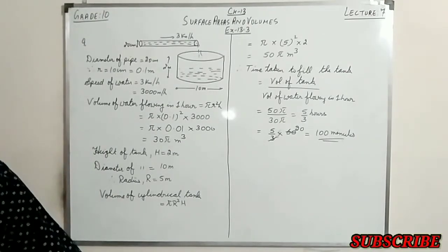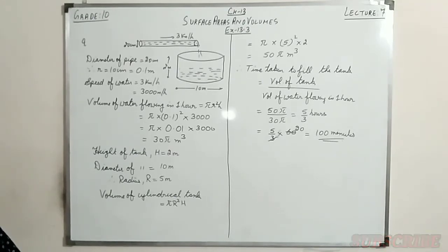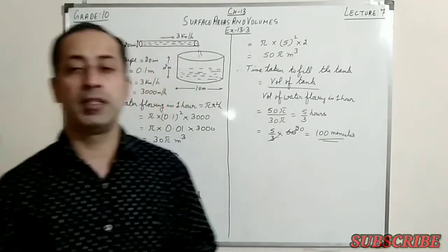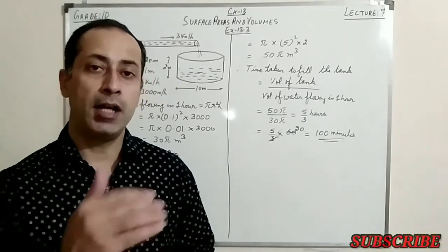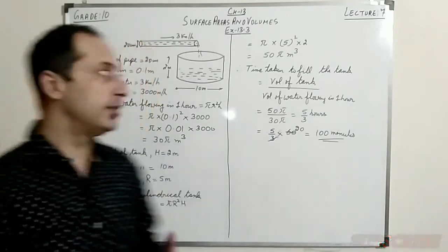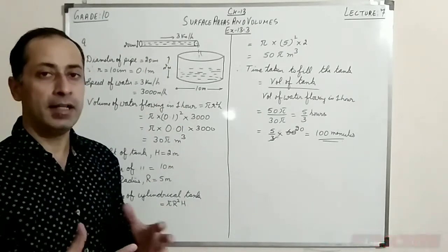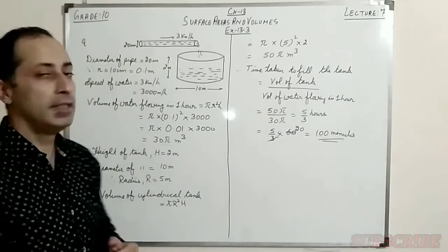Now let's see the last question, question number 9. A farmer connects a pipe of internal diameter 20 cm from a canal into a cylindrical tank in her field, which is 10 meters in diameter and 2 meters deep. If water flows through the pipe at the rate of 3 km/hr, how much time will it take to fill the tank? This is basically a pipe connected to a canal, with water going inside the cylindrical tank. The diameter of the pipe is 20 cm and the speed is 3 km/hr.